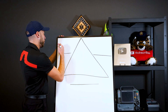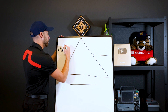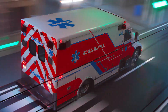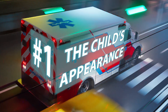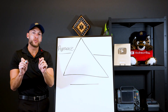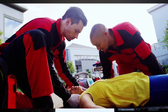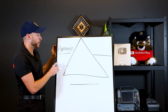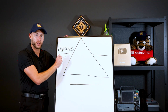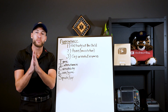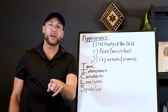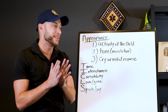Our first part is the appearance of the child. So when you first walk in the room, what do you see? What is the activity of the child? What is the muscle tone of the child? Appearance is the first step of the triangle — it's what we look for when we walk in the room. There are three main parts of the appearance section.